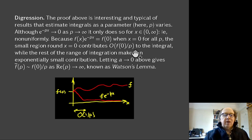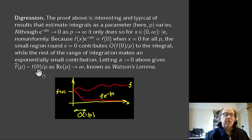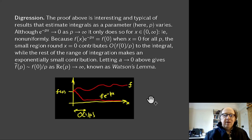If you do a little more work, letting a tend to zero after the calculation, you find an estimate for how the Laplace transform decays — it looks like f(0)/p. This is called Watson's lemma. This would be a good moment for your exercise — I'll pause for a second to let you do that.